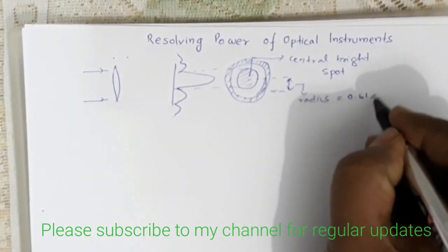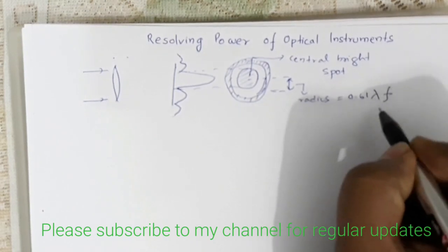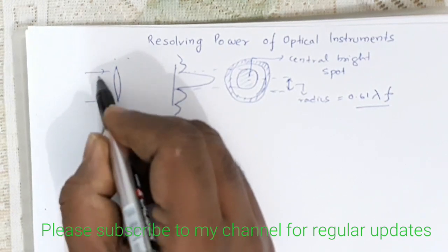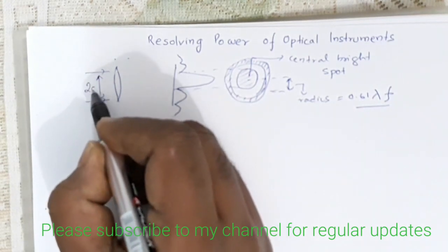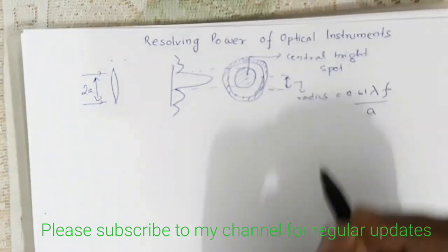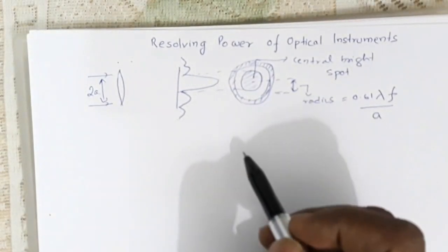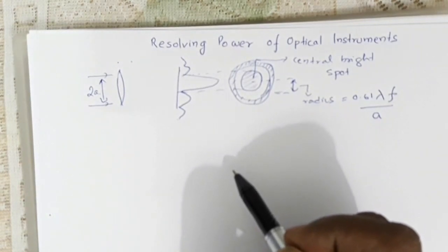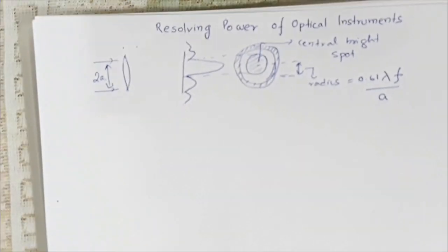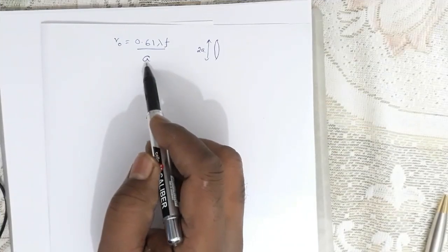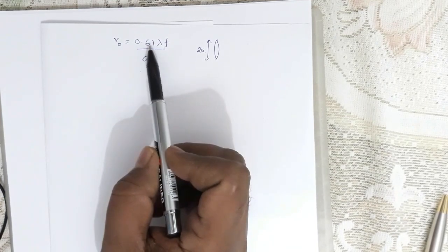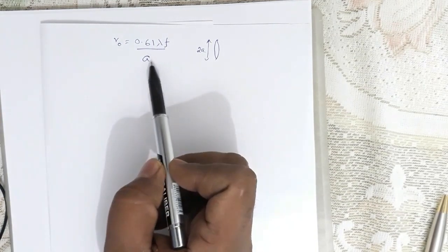The radius R₀ = 0.61 λf / a. Now if this lens has a diameter twice a, then a is the half-aperture. So this is the radius of the central bright spot in the diffraction pattern: R₀ = 0.61λf/a.